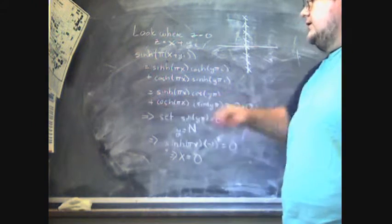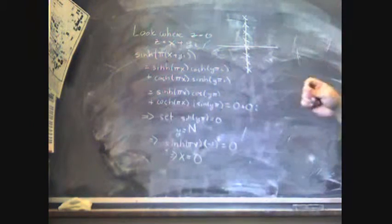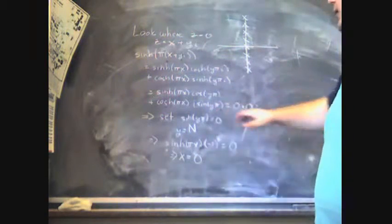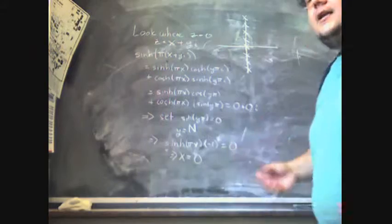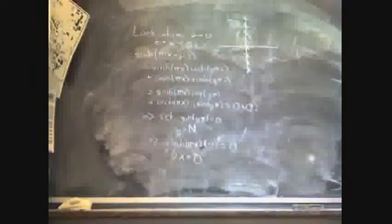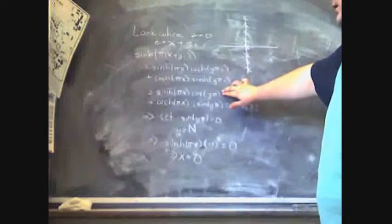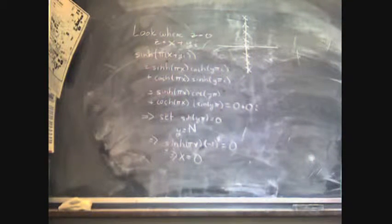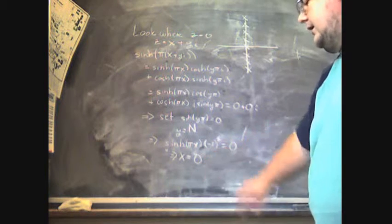One thing we know is that the cosh function never is zero. Its minimum value is one. So we need to then set our sinh of yπ to zero, which then means that y can be any integer. So that's going to be a problem. But then the other case is we need the real part to be zero. So cosine of some integer π is going to be plus or minus one. So that can't be zero. So then our sinh has to be zero. And fortunately for us, it's only at one point, x equals zero.